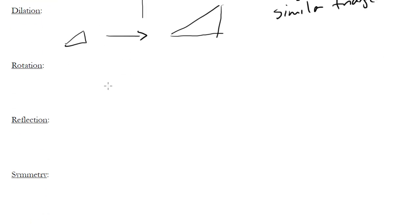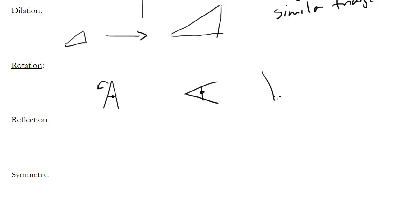Next is a rotation. Let's imagine we've got the letter A. When you rotate something, you rotate it about a point, so we could rotate this about the center. If we rotated it 90 degrees counterclockwise, it would look something like this. That's a rotation, and we can keep rotating it so it's upside down, then sideways, and eventually back to where we started.